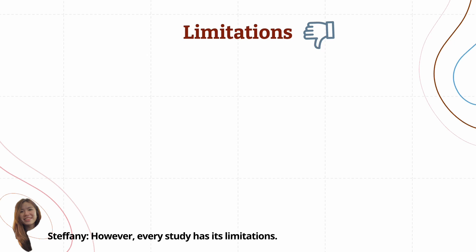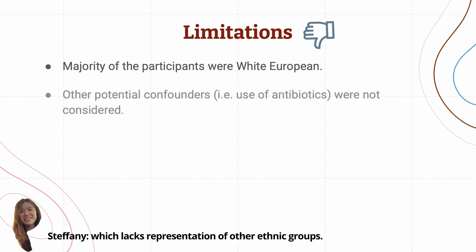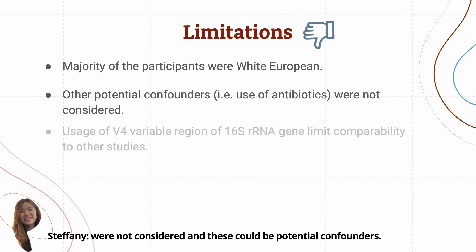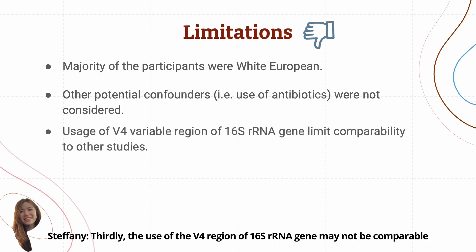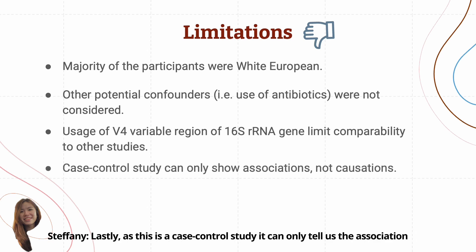However, every study has its limitations. Firstly, the majority of participants were white Europeans, which lacks representation of other ethnic groups. Secondly, the use of probiotics, antibiotics and hormonal drugs were not considered, and these could be potential confounders. Thirdly, the use of the V4 region of the 16S rRNA gene may not be comparable to other studies using other variable regions. Lastly, as this is a case control study, it can only tell us the association between certain CSTs and the risk of preterm delivery, not causation.